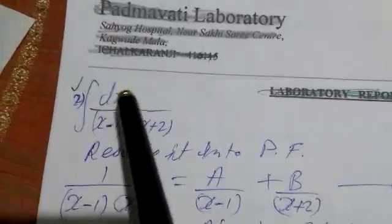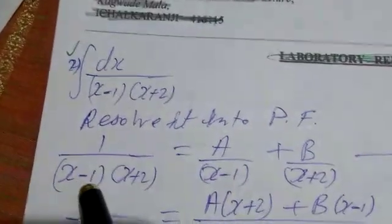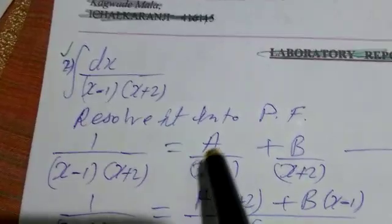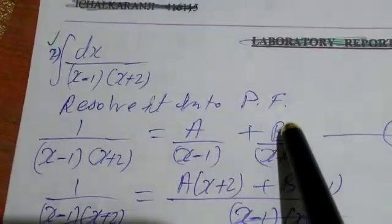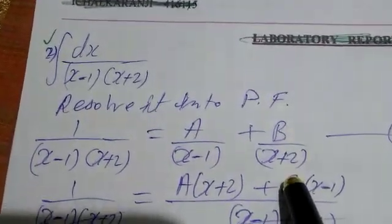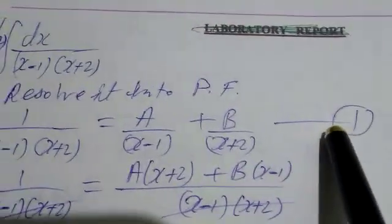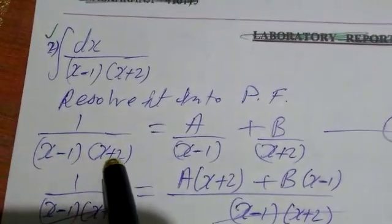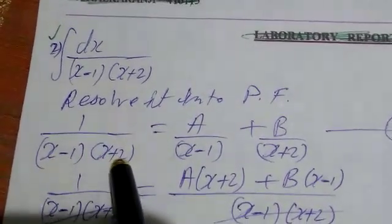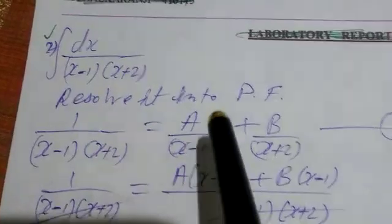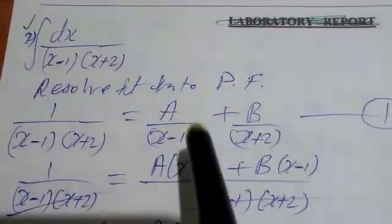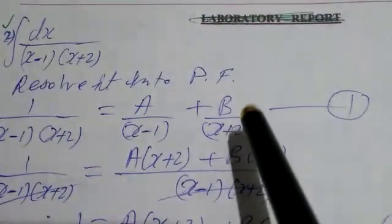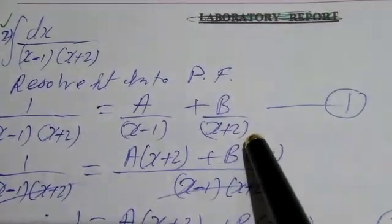dx means the numerator is 1. So, 1 upon (x minus 1)(x plus 2) is equal to A upon (x minus 1) plus B upon (x plus 2). I am naming this as equation 1. Now, (x minus 1) and (x plus 2) are two factors. That is why for one factor I am taking constant A upon (x minus 1), and for the second factor B upon (x plus 2).